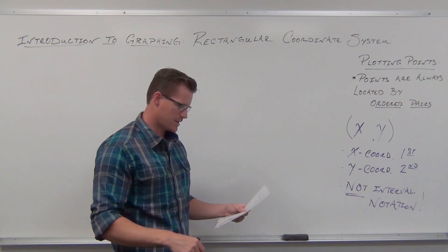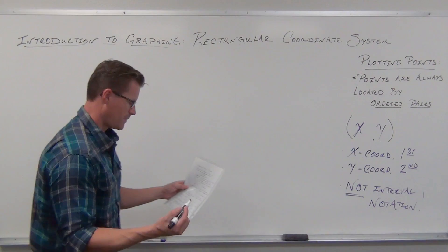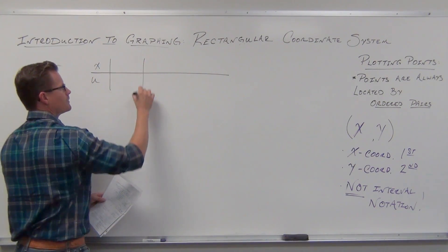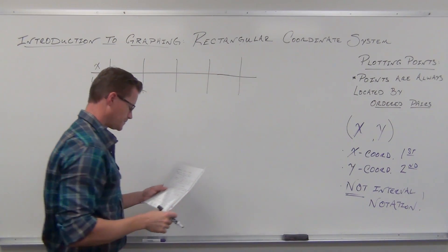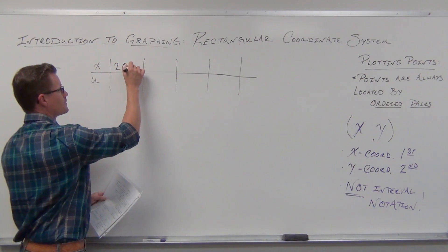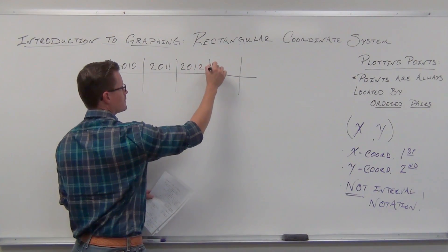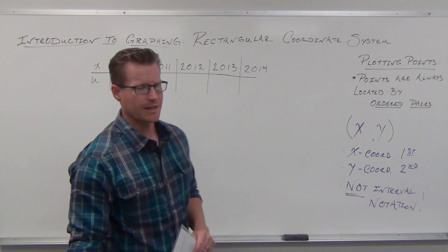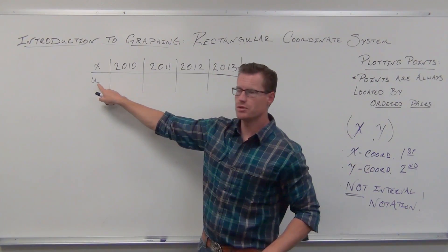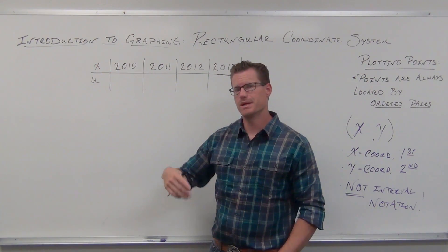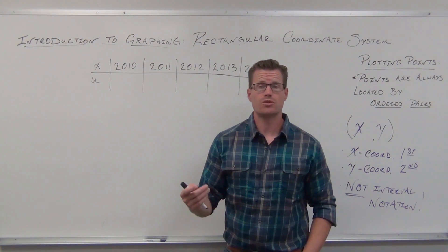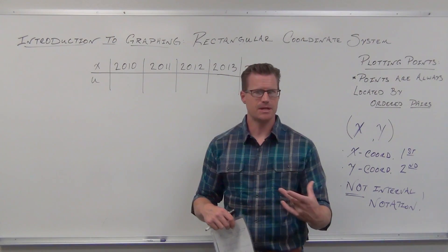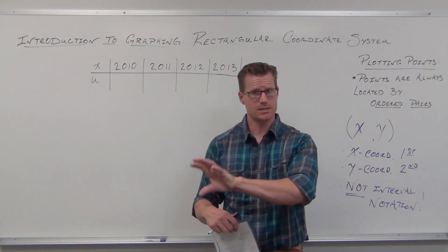Let's use internet users data. Here's some data — I think I just made it up or got it from somewhere. I have about four or five years of data, and here's the number of internet users for each year given. When we get to plotting, it's important to understand which variable is depending on the other one. We call one an independent variable and the other a dependent variable. One variable generally depends on another variable in scatter plots and in graphing.